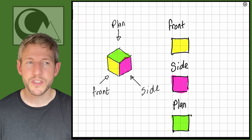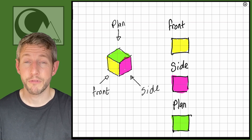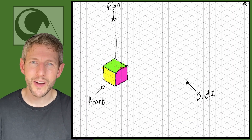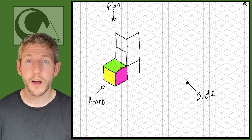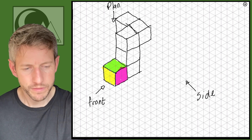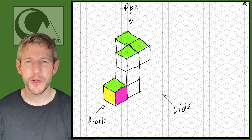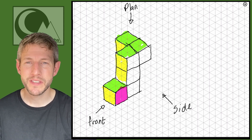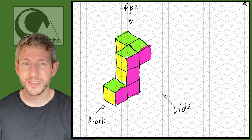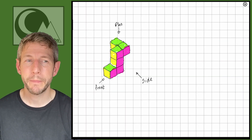In functional skills maths we have to be able to identify the side, plan, and front view when the shapes change a little bit. So let's go back to the isometric paper and draw a slightly more complicated shape by adding some more cubes. I've coloured the cubes seen from above — the plan view — green, the cubes seen from the front yellow, and the cubes seen from the side pink.